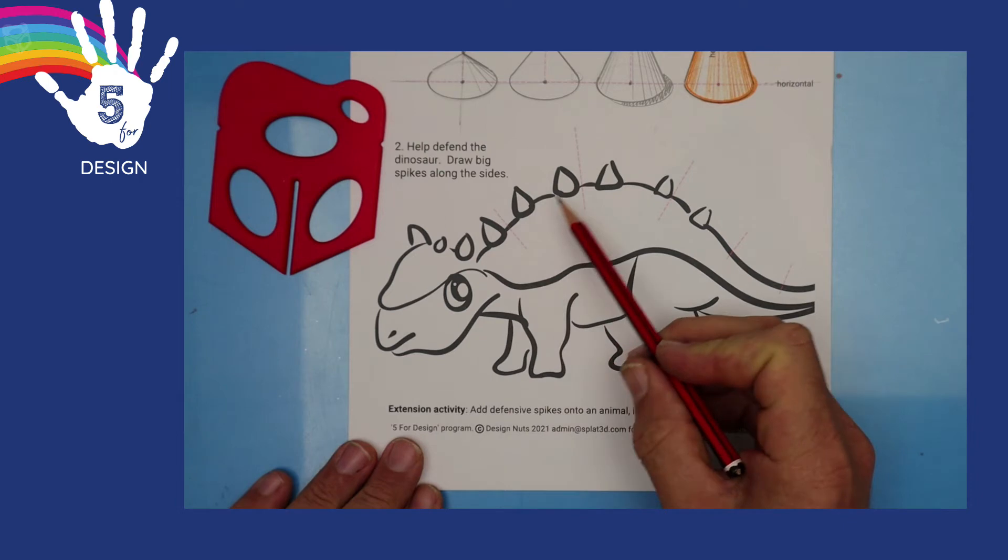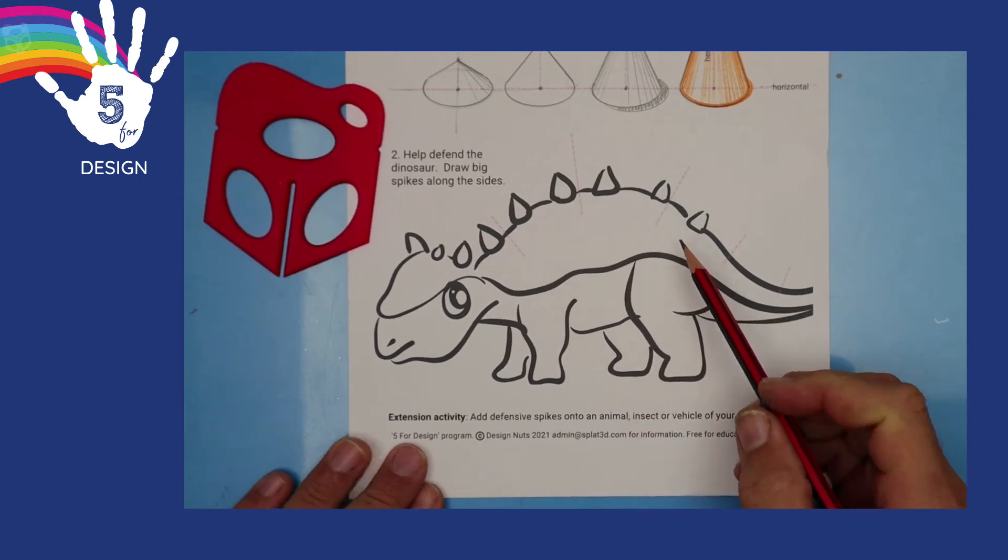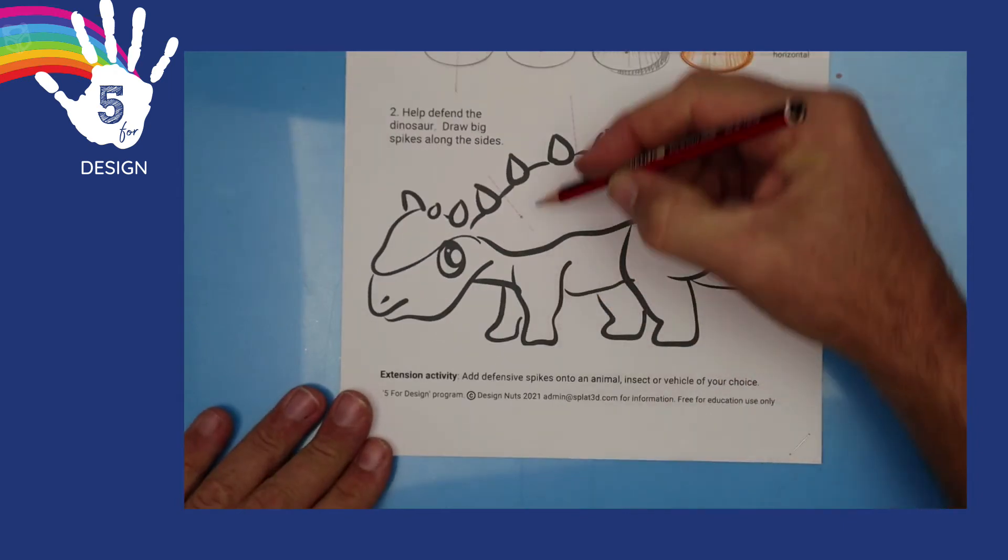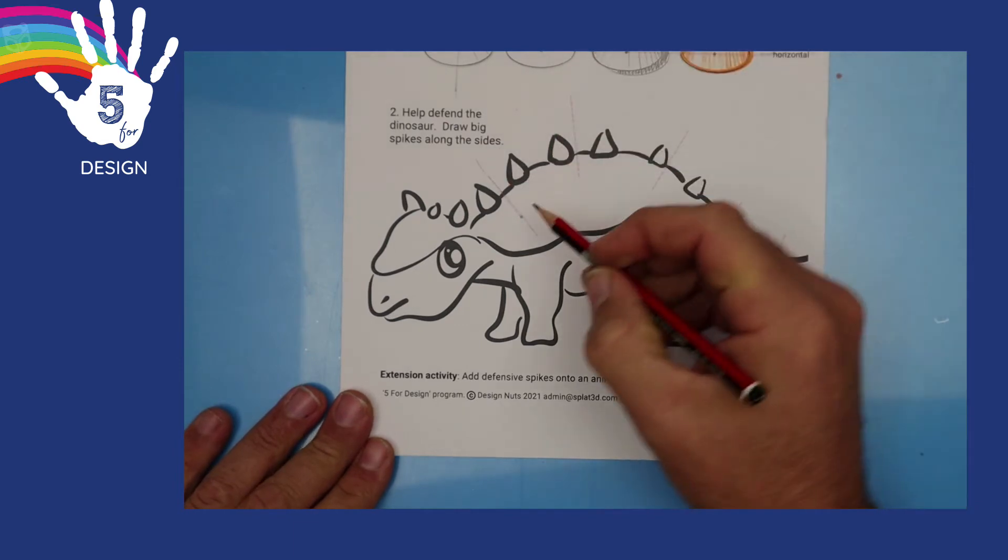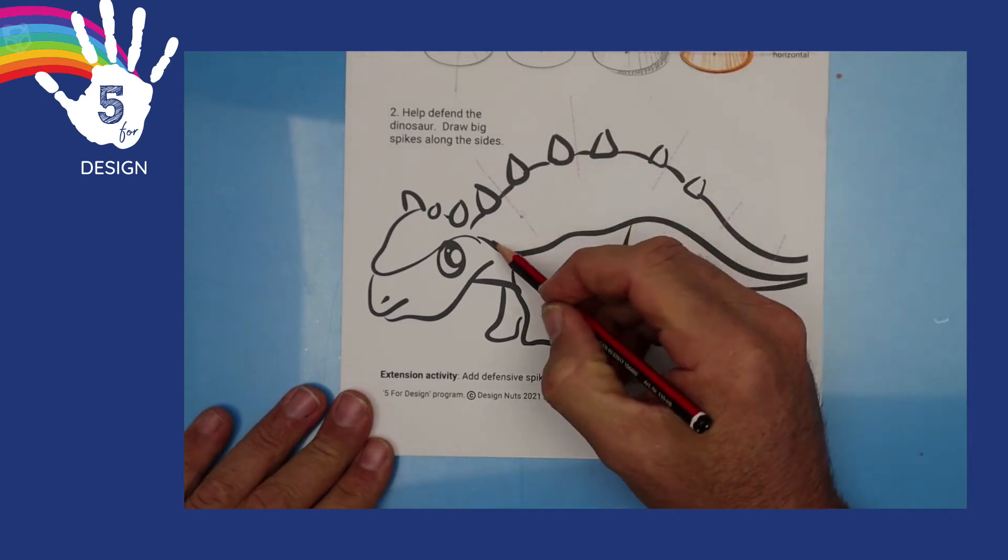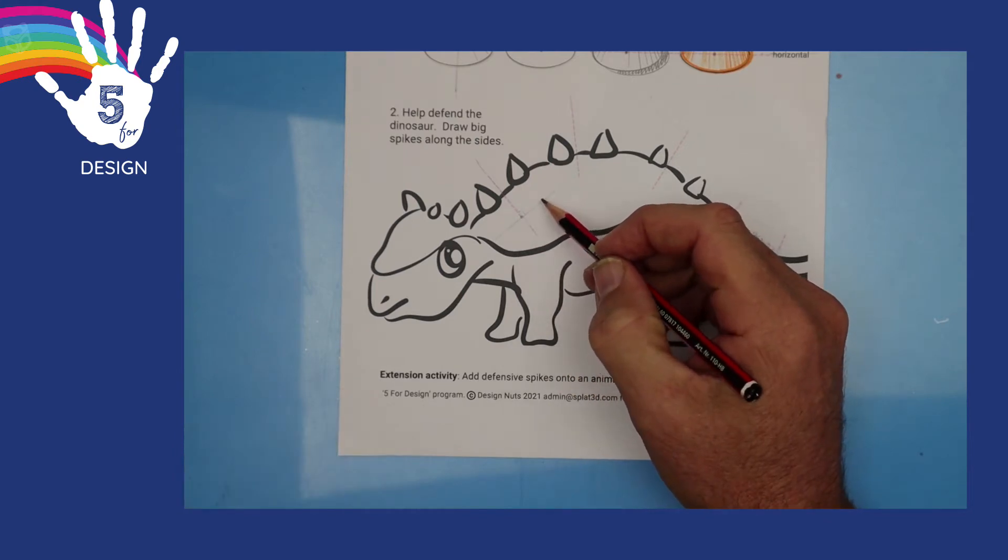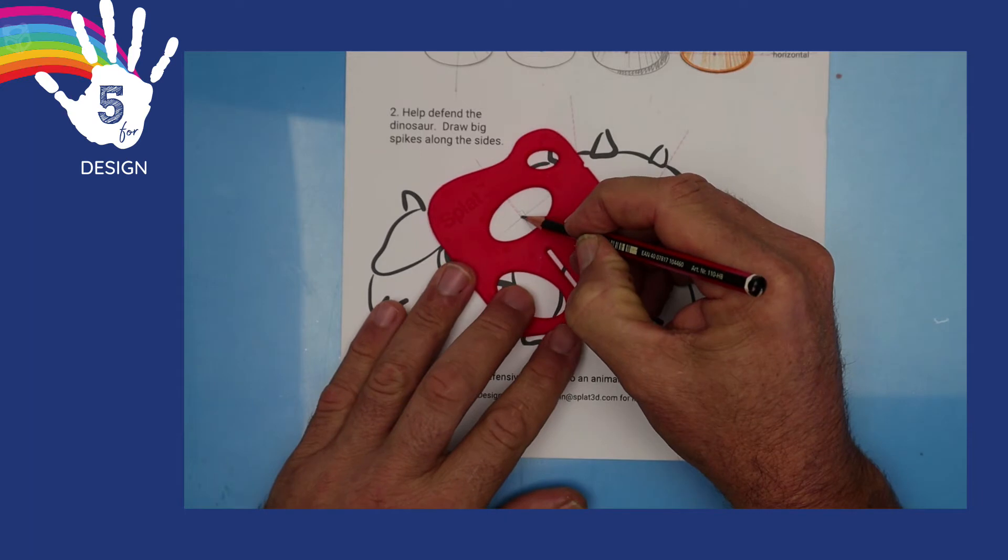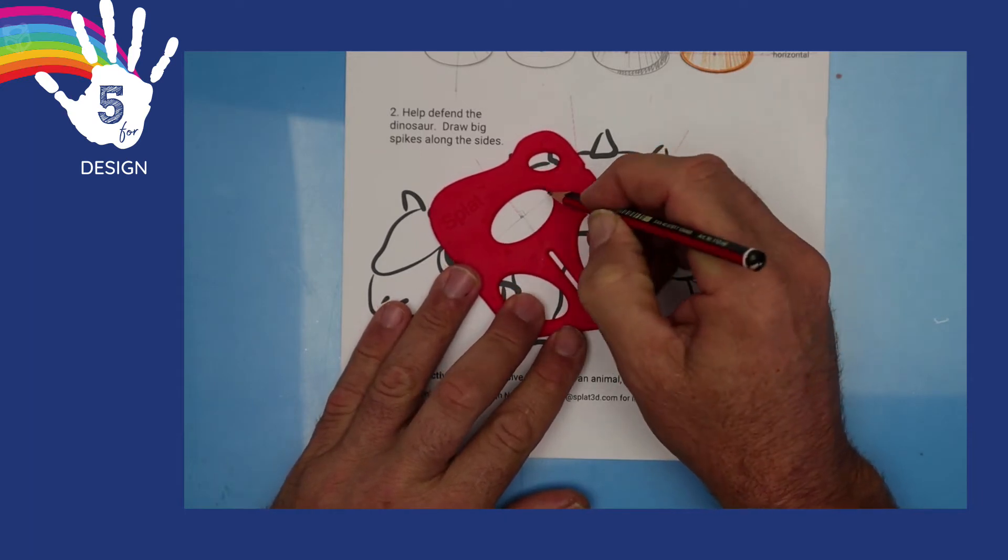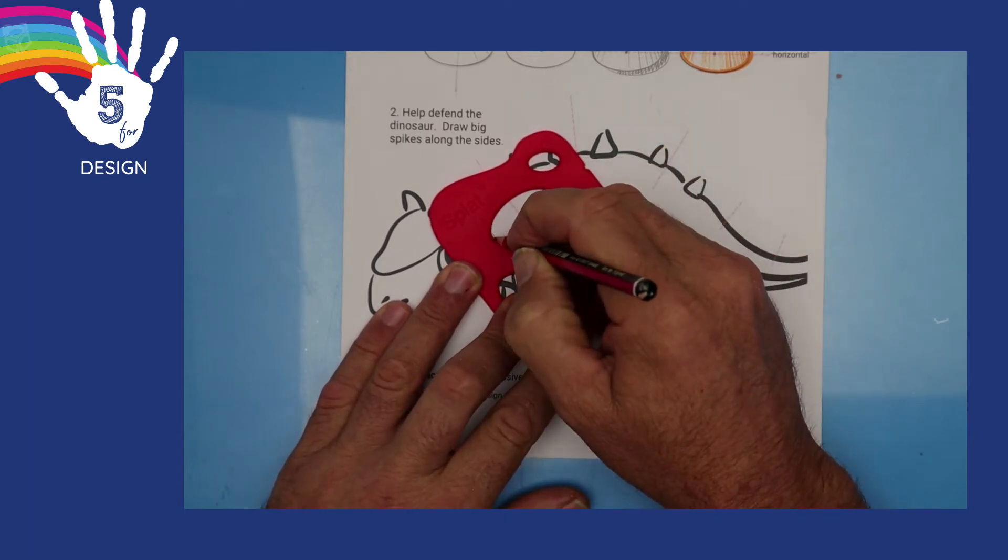This cute little dinosaur has small spikes on its back, and it needs some beefed up defense. So let's do it along that axis. Choose a starting point. And then at 90 degrees to it, or square, we sketch the long axis. And that shows us what angle to place the splat.